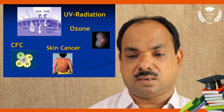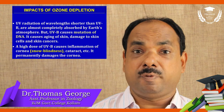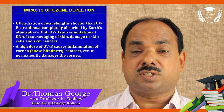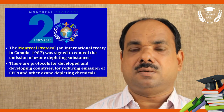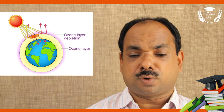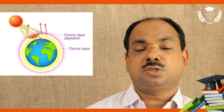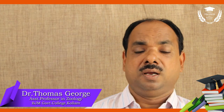Skin cancer affects various body systems. UVB light causes snow blindness, cataract, and cancer. The Montreal Protocol 1987 was signed by various countries to reduce the loss of the ozone layer by reducing ozone-depleting substances.